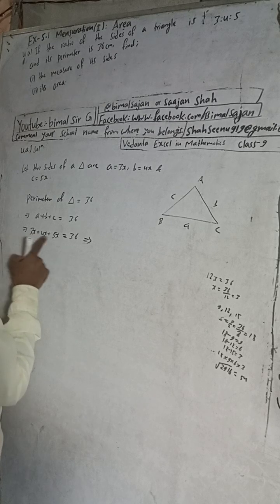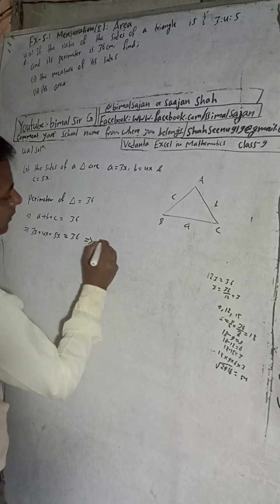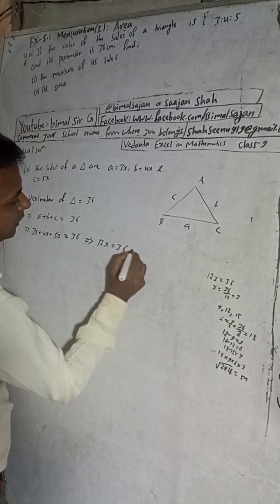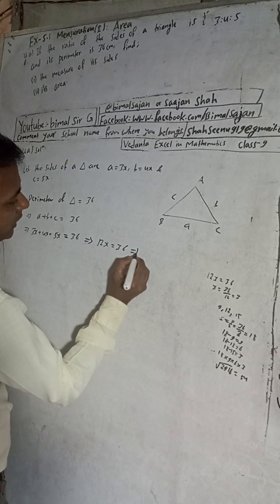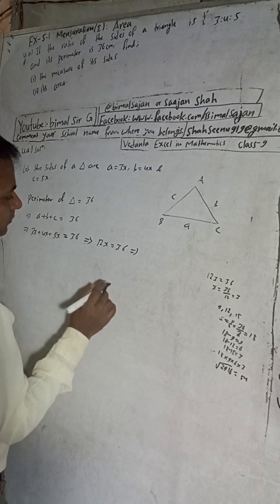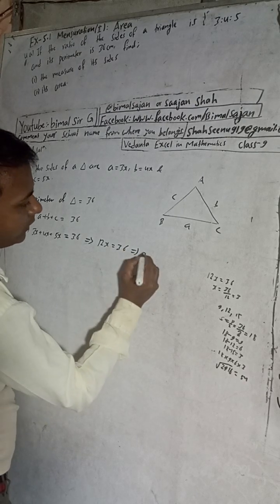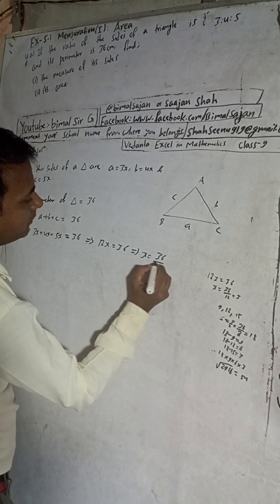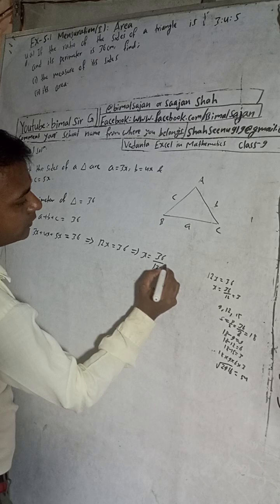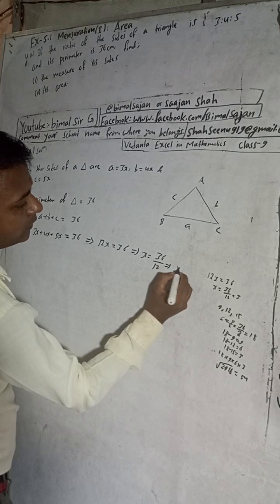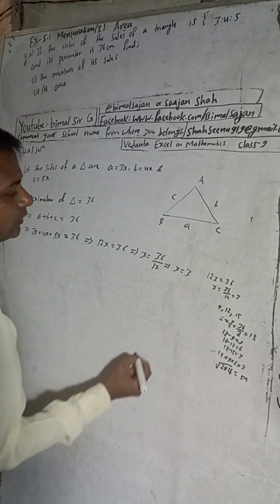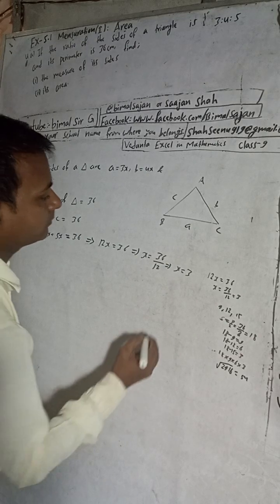Adding the coefficients: 3 + 4 + 5 = 12, so 12x = 36. This implies x = 36 ÷ 12, therefore x = 3.